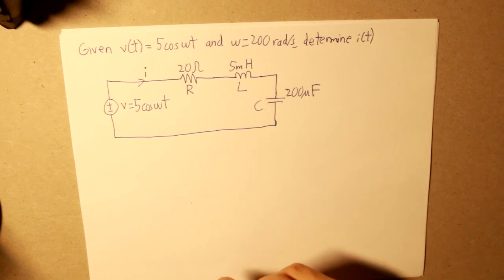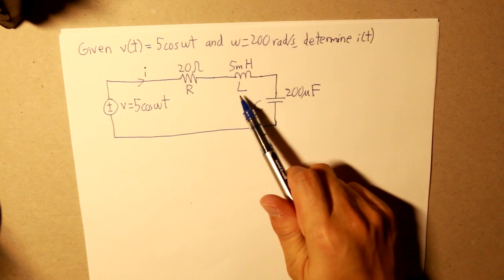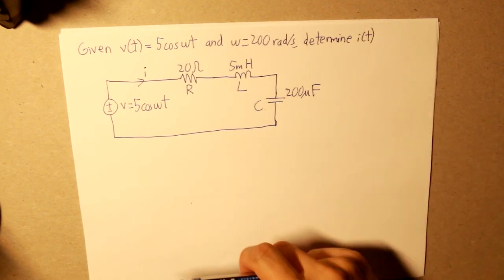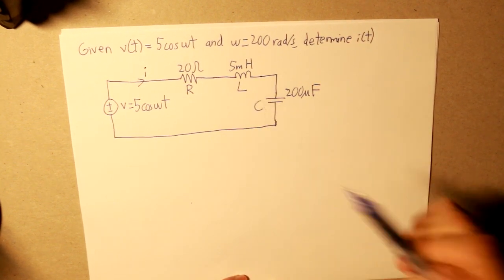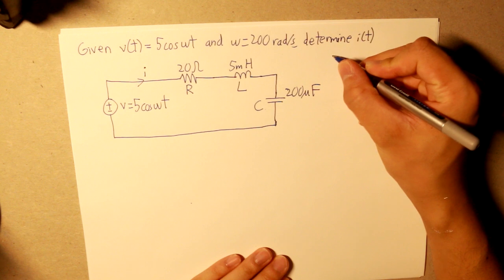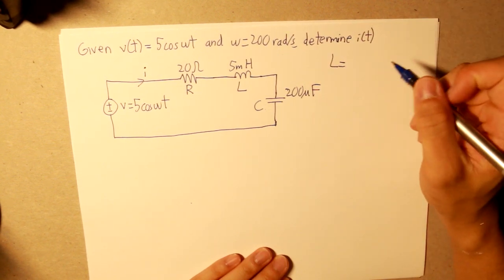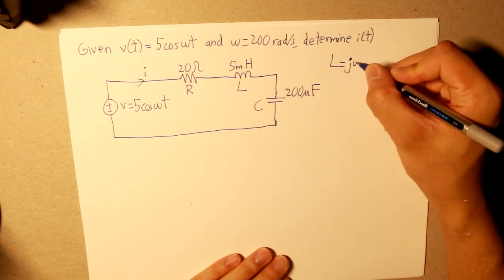So, given the idea of phasors, we do know that we can use it to convert the inductance and the capacitance to its ohm value. So let's do that, shall we? So let's start on our inductance. So our inductance, to find our ohms, we use the equation jωL.